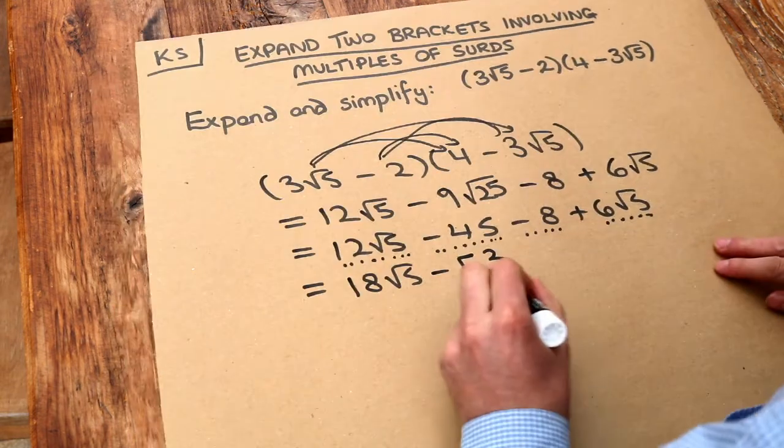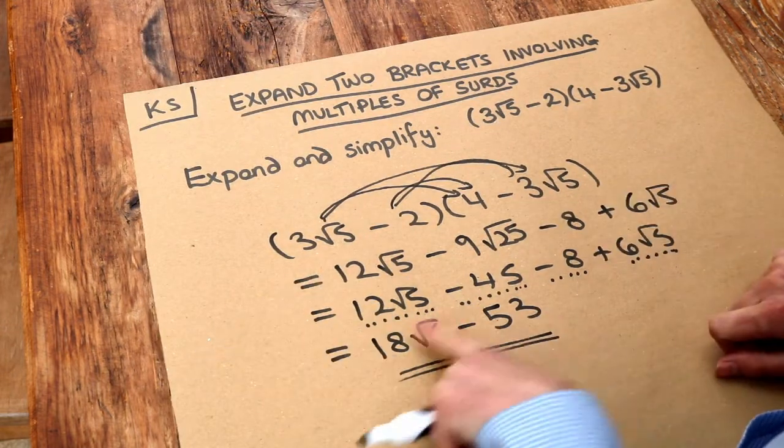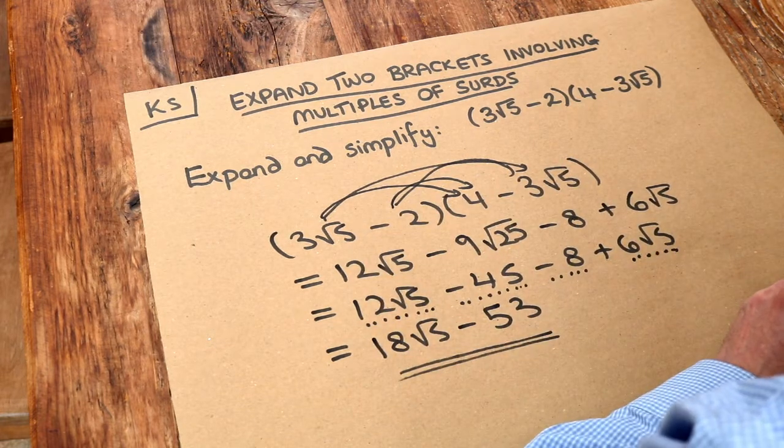So minus forty-five subtract eight is minus fifty-three, and that is the final answer. In fact, if you were to type this into a calculator, it would simplify to this expression for you, so you can use a calculator to check whether your working is right.